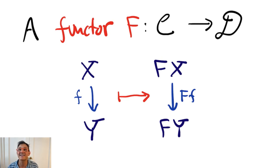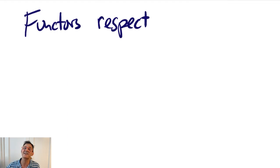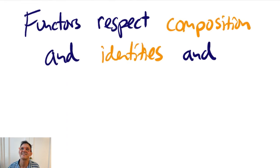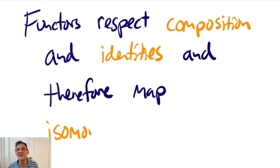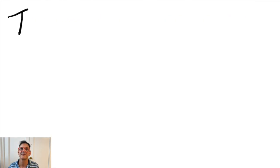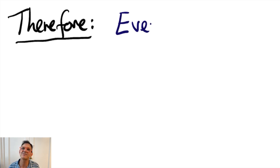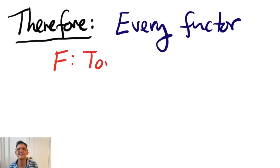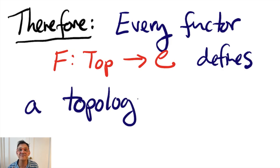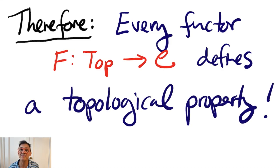Now, a functor satisfies some axioms. It sends morphisms to morphisms in a way that respects composition and identities, which implies that functors send isomorphisms to isomorphisms. Therefore, every functor from the category of topological spaces to another category defines a topological property.